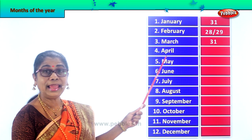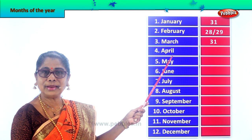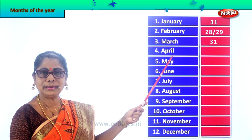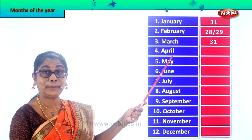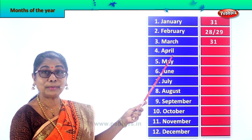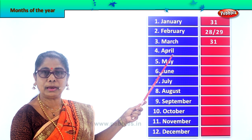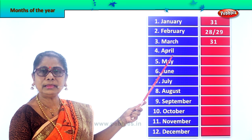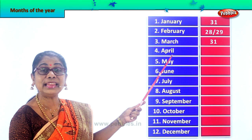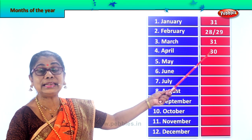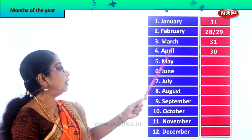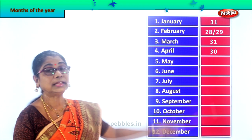Next, April. Do you like April? That's the month when you write your exams — promotion time! Spell April — A-P-R-I-L, April. The month of April has 30 days. How many days? 30 days. The number of days for April is 30.